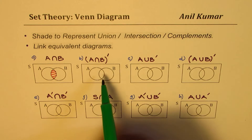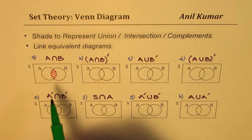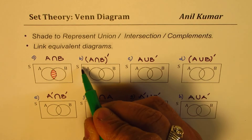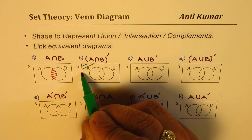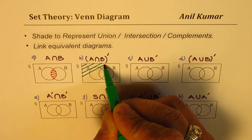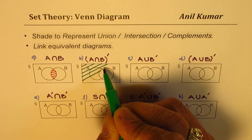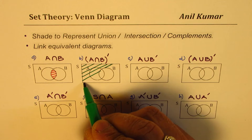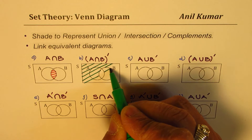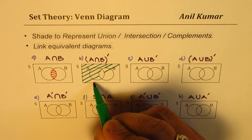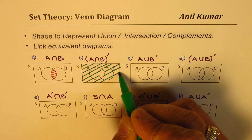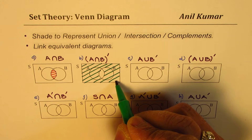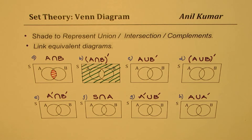So 'not A∩B' means everything outside the intersection. We shade everything outside and leave unshaded the region common to both — that is the whole idea. So that is the complement of A∩B.